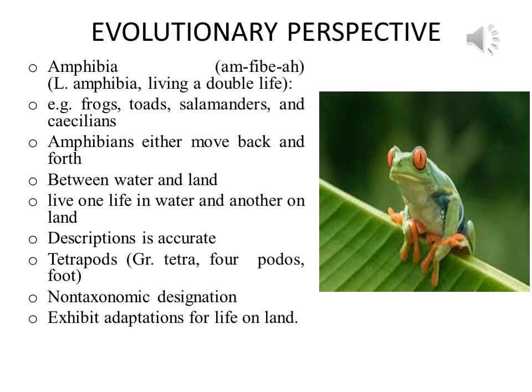Mostly the amphibians are tetrapods. Tetrapods means they have four limbs or feet. The term tetrapod is a non-taxonomic designation that applies to all vertebrates other than fishes, and most tetrapods exhibit adaptations for life on land.